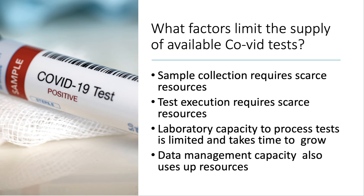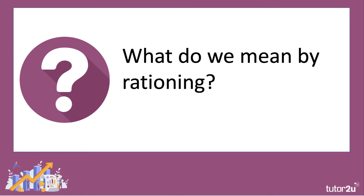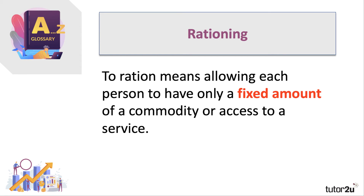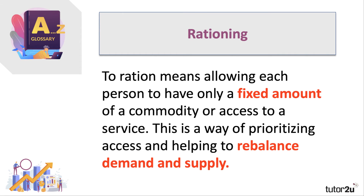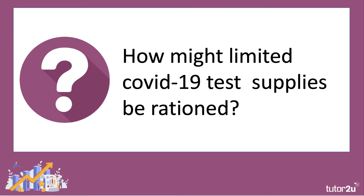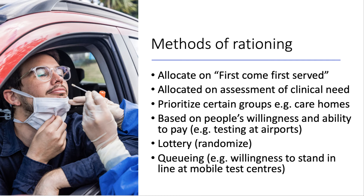In a situation where demand outstrips supply and the price mechanism doesn't function — test prices are not going up because of scarcity — some form of rationing is needed. To ration means allowing each person to have only a fixed or limited amount of, or access to, a commodity or service such as the testing service. Rationing is a way of trying to prioritize access, rebalance demand and supply, and is often a short-term response to a bigger problem.